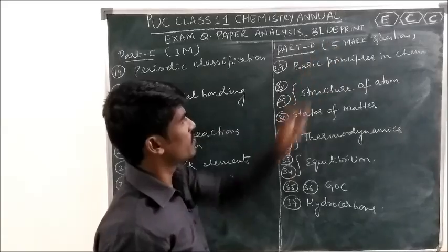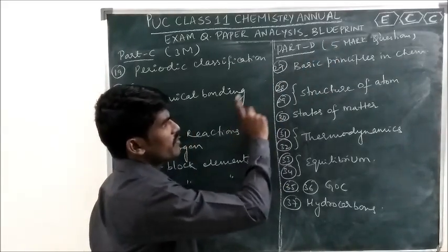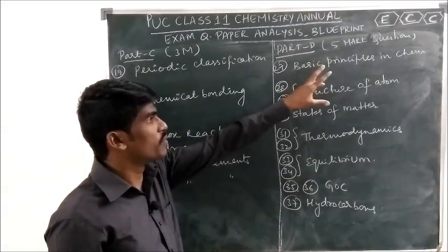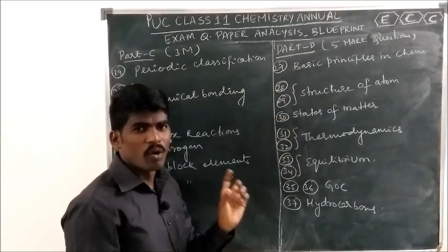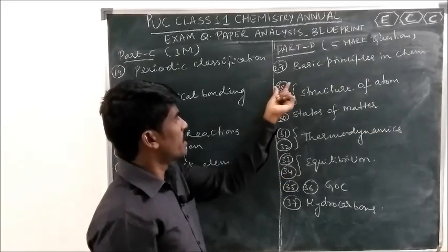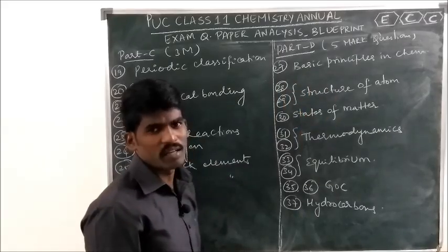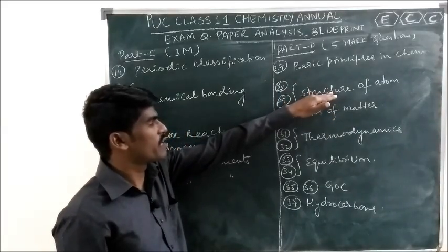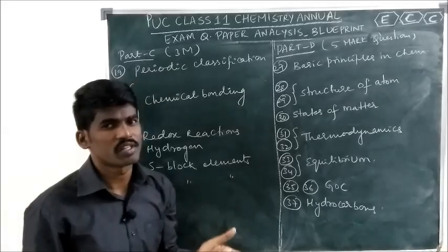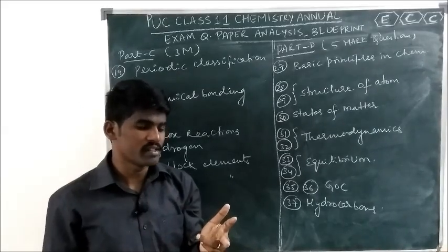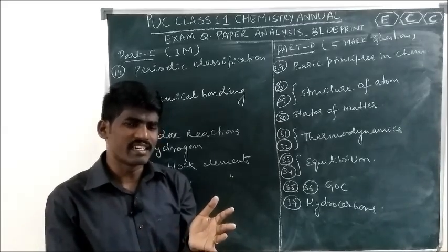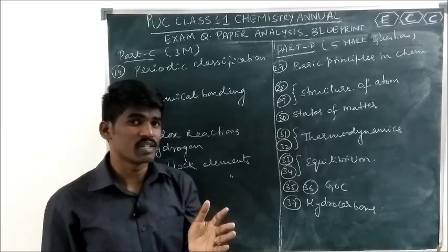Part D — 5-mark questions. Question 27 is from Basic Principles in Chemistry — generally related to empirical formula calculations, molecular formula calculations, or sometimes stoichiometric calculations. Questions 28 and 29 are both from Structure of Atom. You need to focus on postulates of Bohr's theory, significance of quantum numbers, de Broglie's hypothesis, and numericals based on it, as well as Heisenberg's uncertainty principle and numericals based on it.